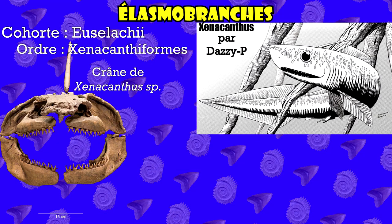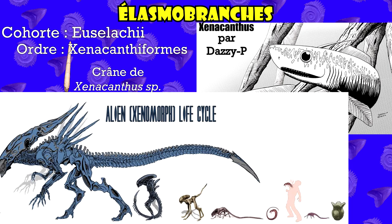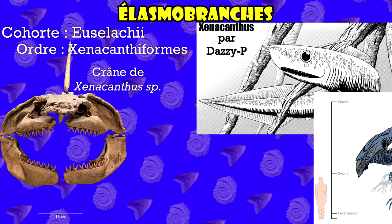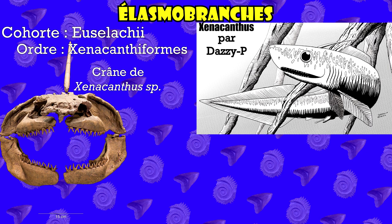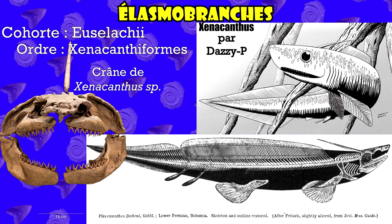Les Xénacanthiformes, aussi appelées Xénacanthes — à ne pas confondre avec les Xénomorphes — il s'agit d'un ordre de requins apparu au cours du Dévonien supérieur et éteint lors de la crise Trias-Jurassique il y a 200 millions d'années. Aussi appelé requin d'eau douce, cet ordre n'a quasiment évolué qu'en milieu d'eau douce. Ces requins ont un corps en forme d'anguille et une belle épine bien longue sur la nageoire dorsale, qui va au cours du temps finir par s'attacher derrière le neurocranium ou sur les épaules.